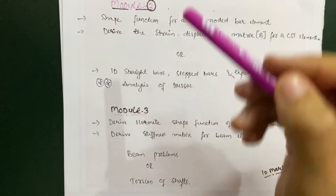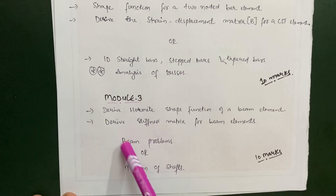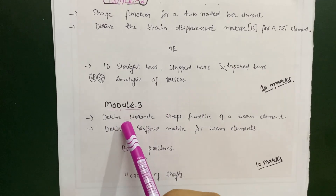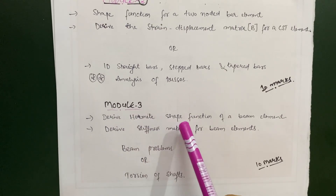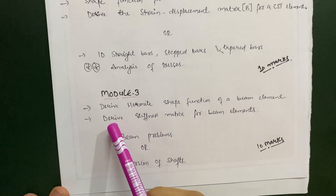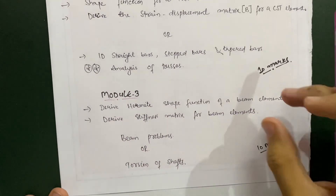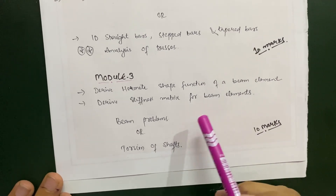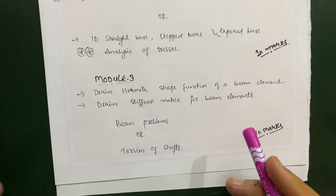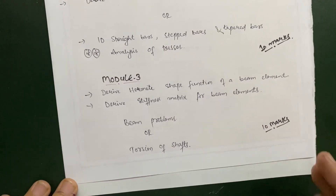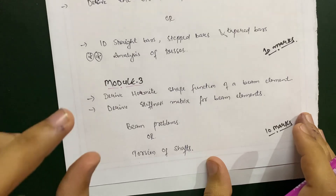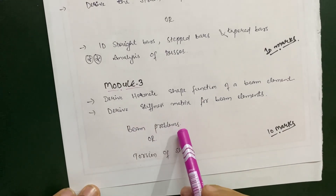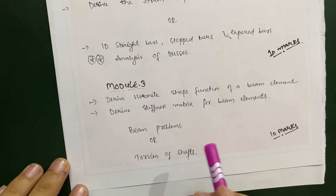Module 3 is a little bit tougher compared to the rest. It covers beam problems and torsion problems. If you are just looking for passing marks, focus on two derivations: derive the Hermite shape function of a beam element, and derive the stiffness matrix for a beam element. Add one problem from beams and you will easily get 10 marks. If you want to score higher, also focus on problems and derivations. For passing, go only for the derivation part — Hermite shape function — or the beam problems, such as a cantilever beam.